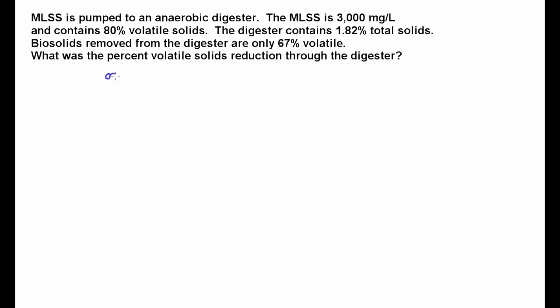The formula for percent volatile solids reduction is in minus out divided by in minus in times out, and then that whole thing gets times 100.